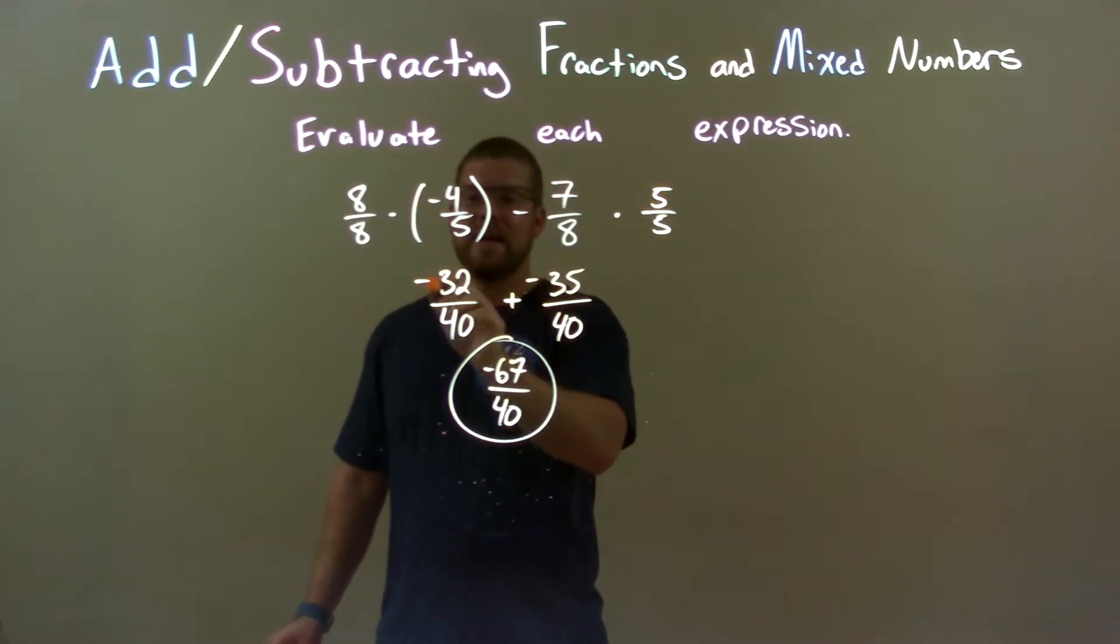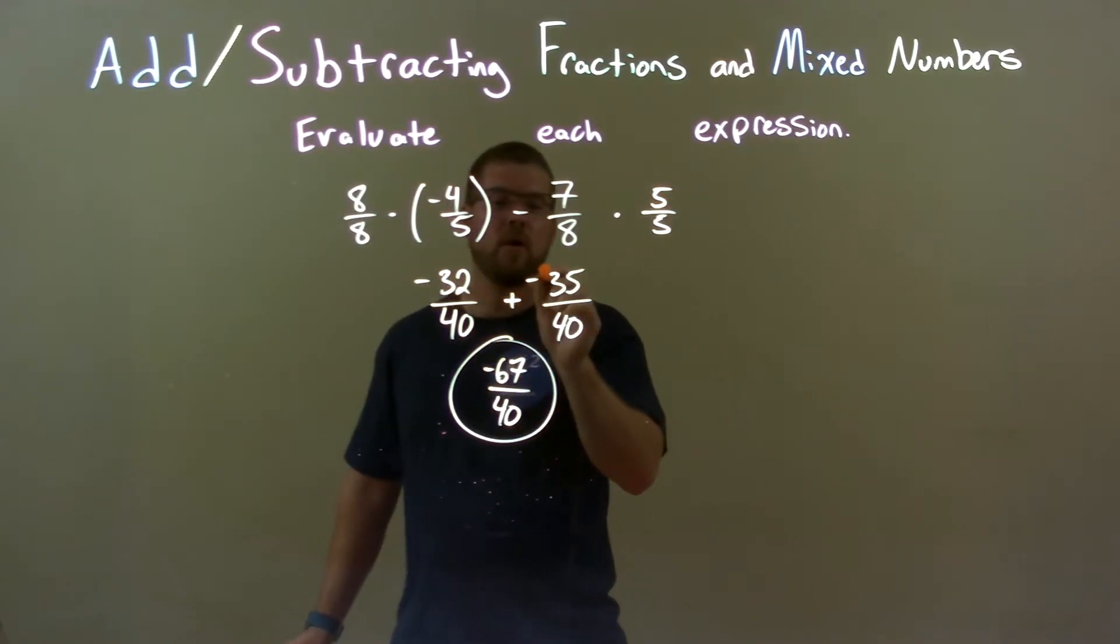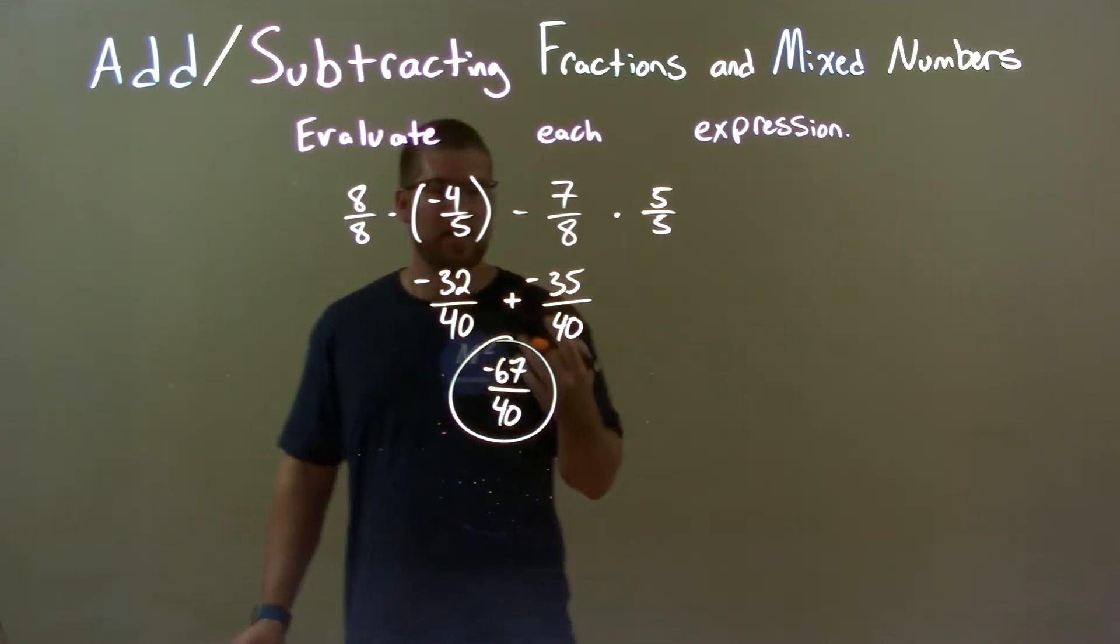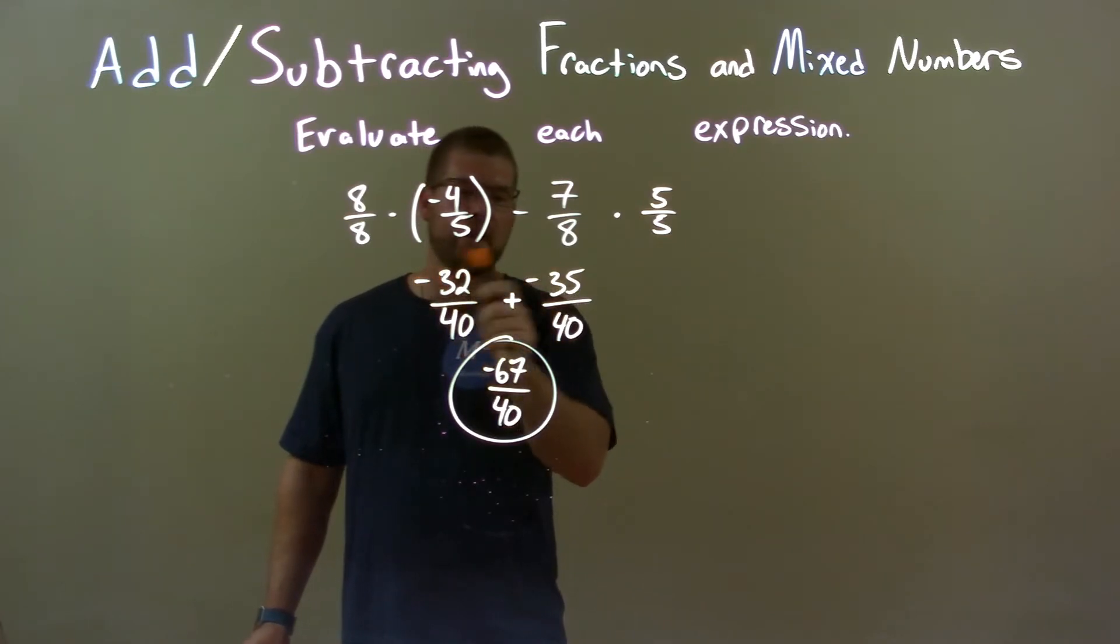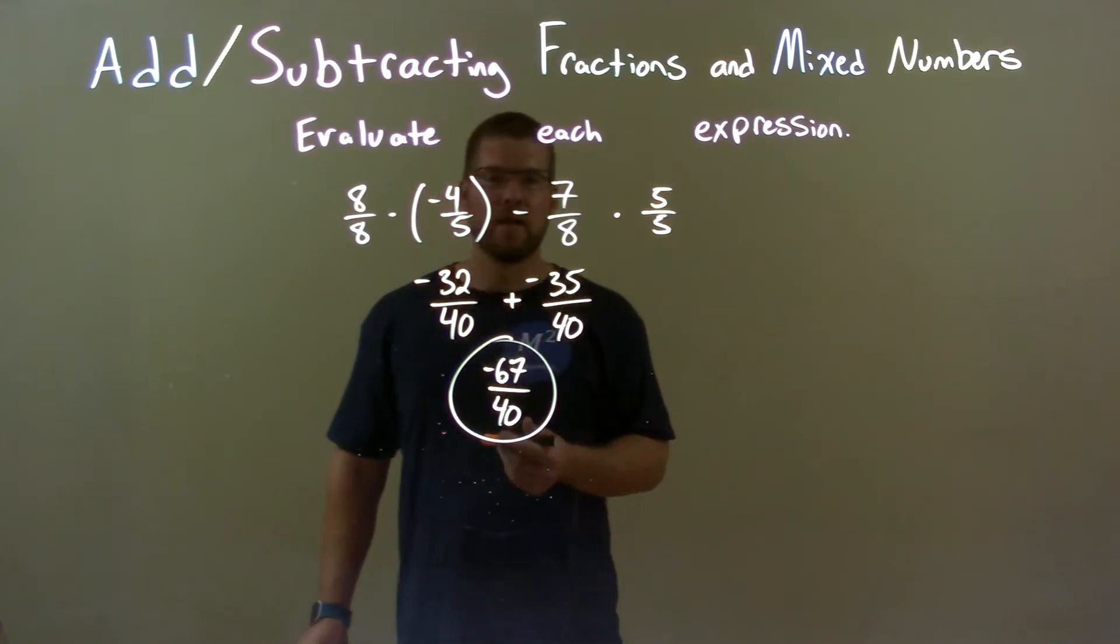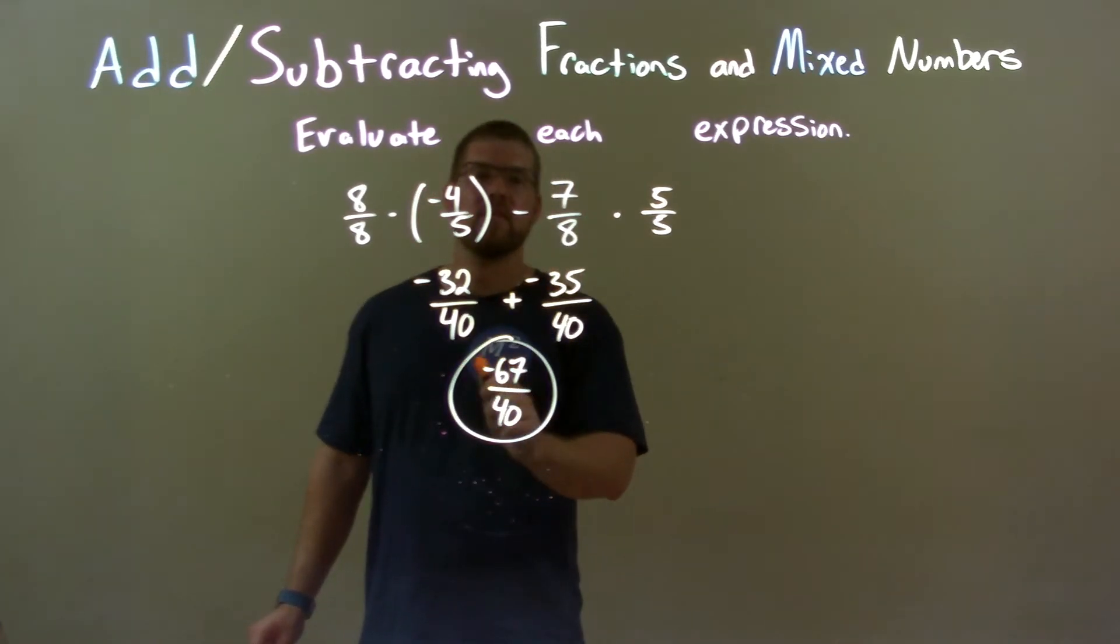And then by doing that, I got negative 32 over 40 minus 35 over 40, and the subtraction was plus a negative. Then I just combined these two fractions, kept the base the same. Added the two negative numbers in the numerator, and I got negative 67 on top. So our final answer, again, is just negative 67 over 40.